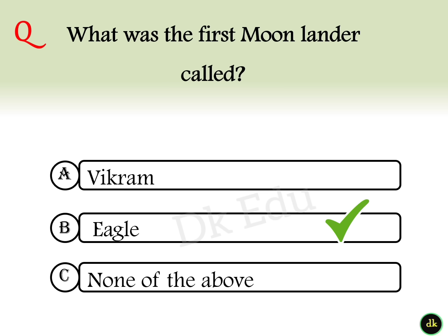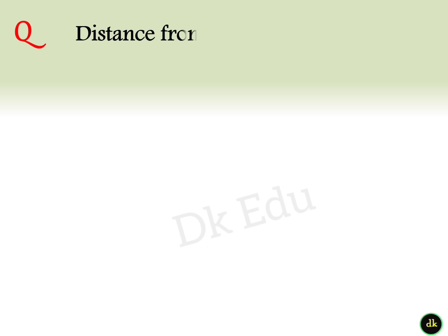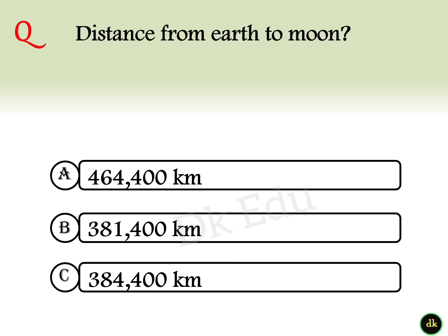22nd question: What is the distance from Earth to the moon? Answer option C: 3,84,400 kilometers.